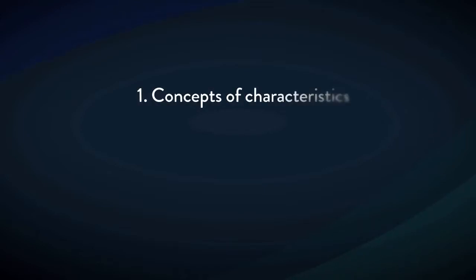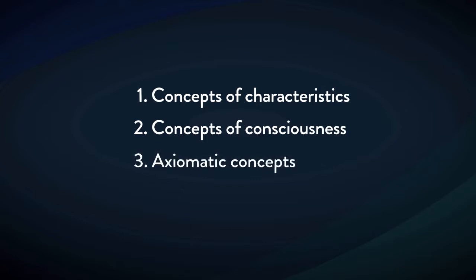We are covering special cases of concept formation — concepts that call for separate discussion because they're not obvious, they're difficult, they don't seem to fit the pattern, although in the end they do. Those are concepts of characteristics, concepts of consciousness, and axiomatic concepts, each of which requires a separate discussion. I want to begin with concepts of characteristics, where I'm filling in a lot that's not explicitly in Introduction to Objectivist Epistemology.